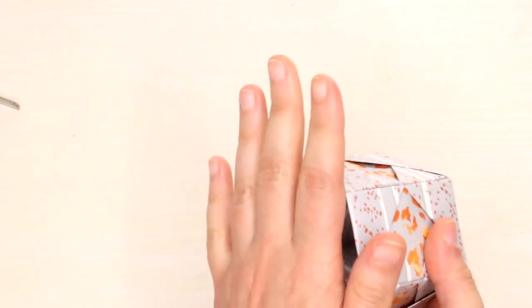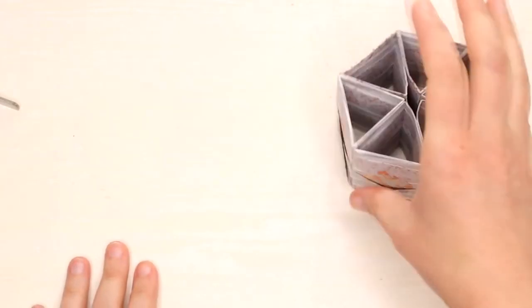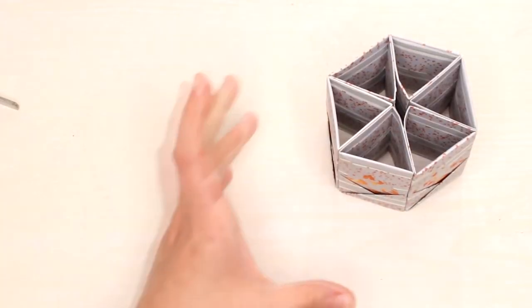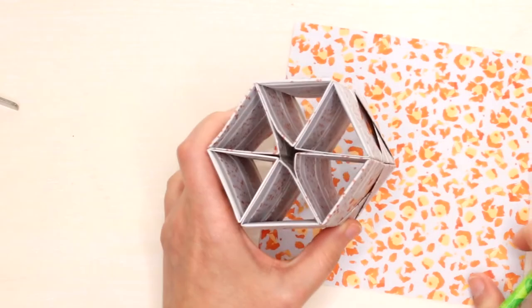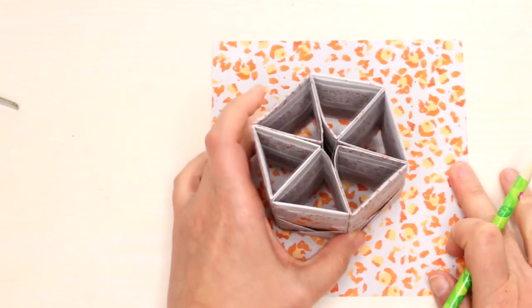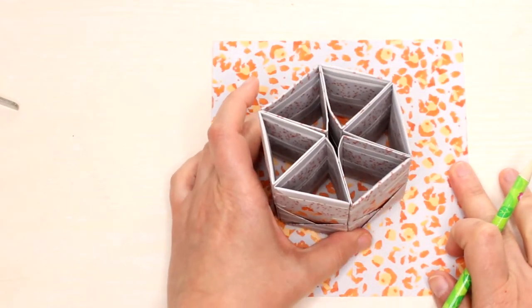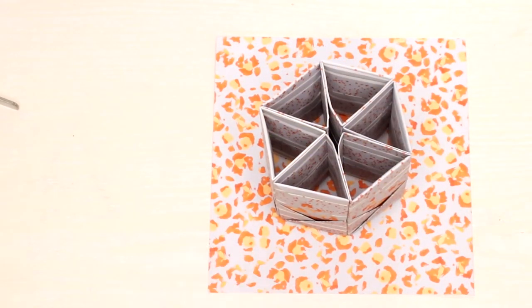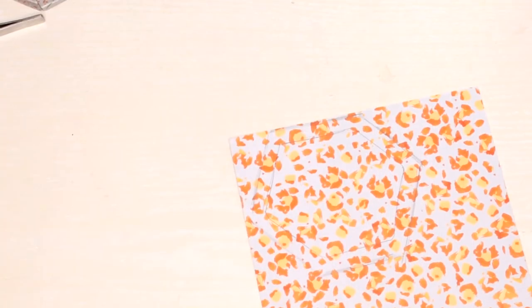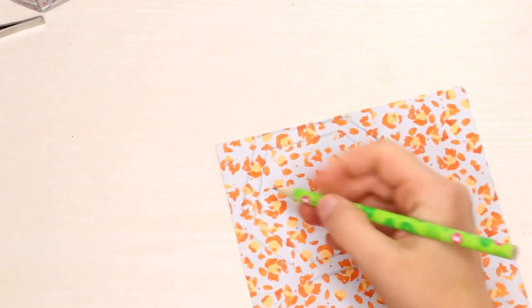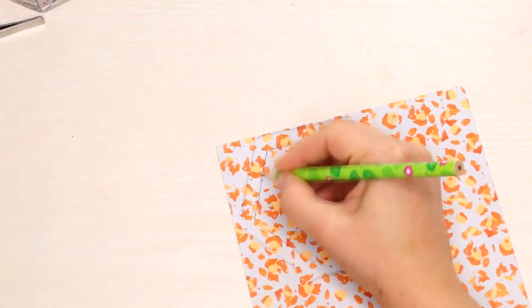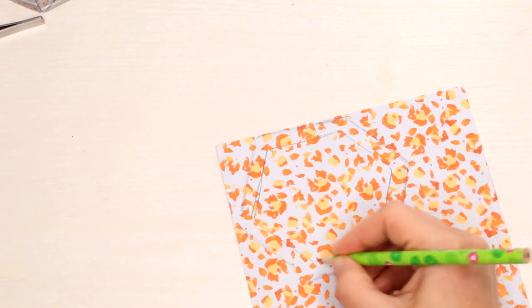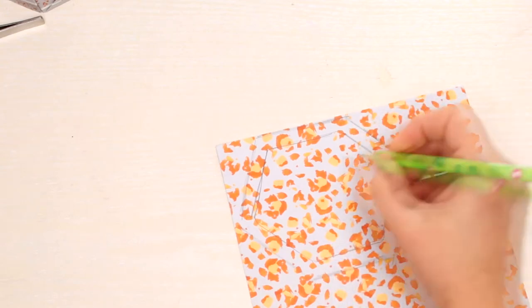Now we need to create the bottom of the pen holder. So take a piece of paper and use a pencil to trace the shape on it. You'll end up having something like this. When you cut out the shape don't forget to add an extra half an inch much like a frame around it.